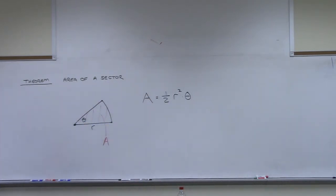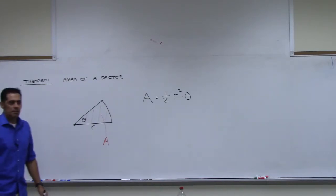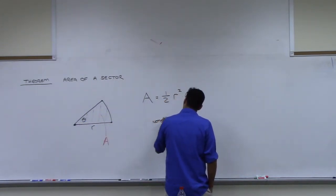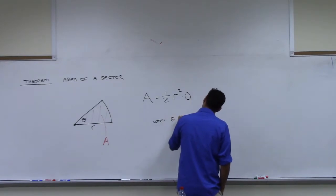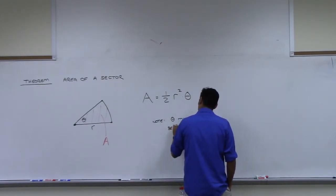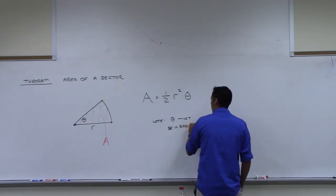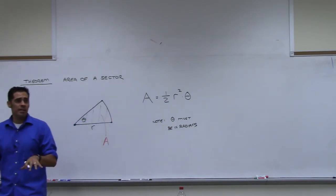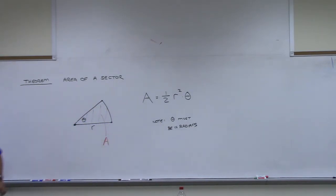The previous theorem gave us a way of measuring this length. This theorem gives us a way of measuring the area in here, A. This is a very nice theorem. And the formula is as follows. A equals one-half r-squared theta. That's the formula. What do you think the one condition is, though, on that theta? It's got to be in radians. The formula doesn't work without radians. So note, theta must be in radians.